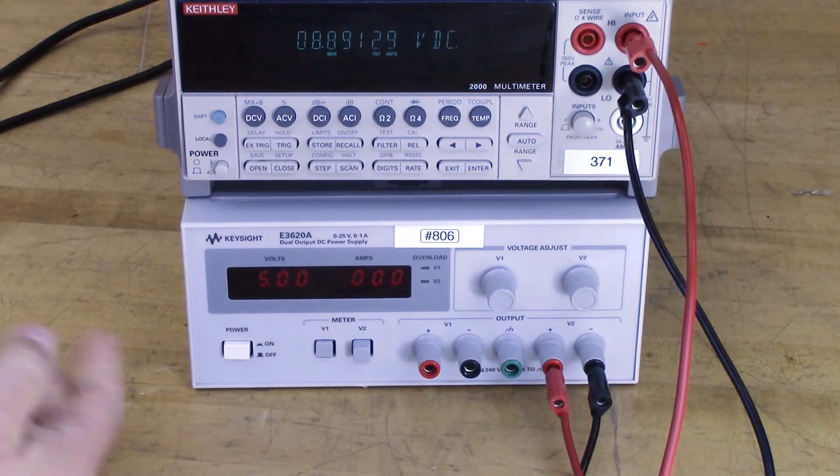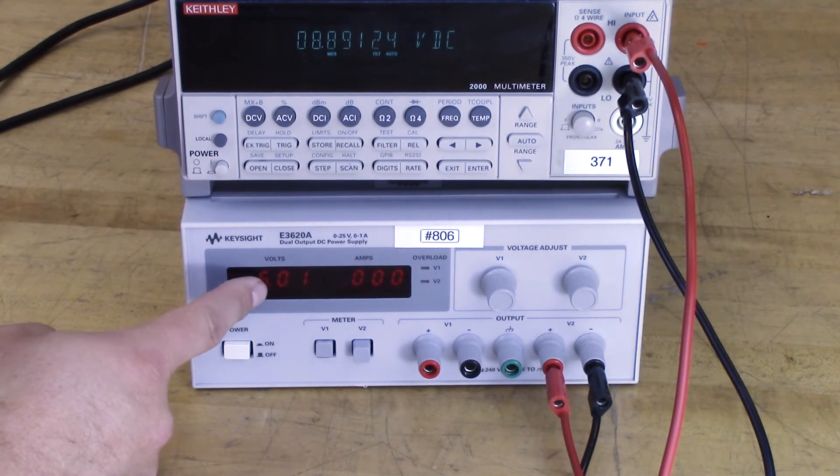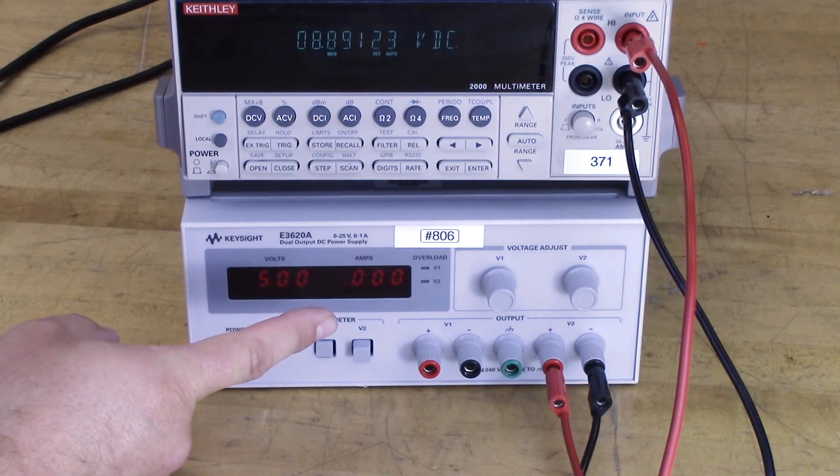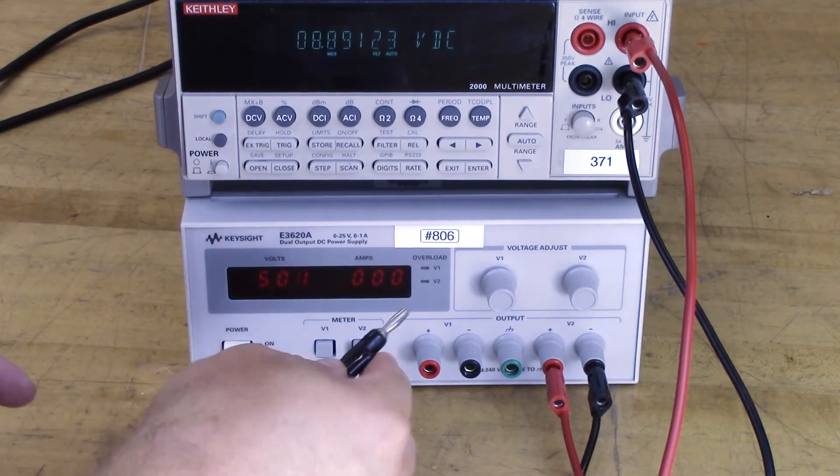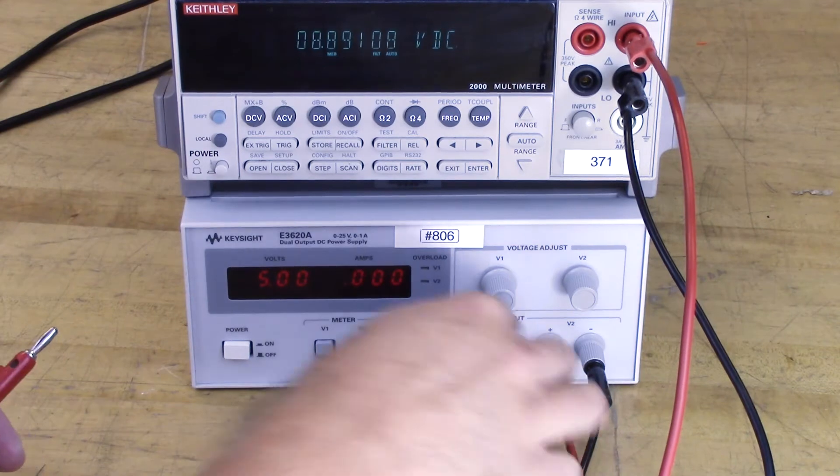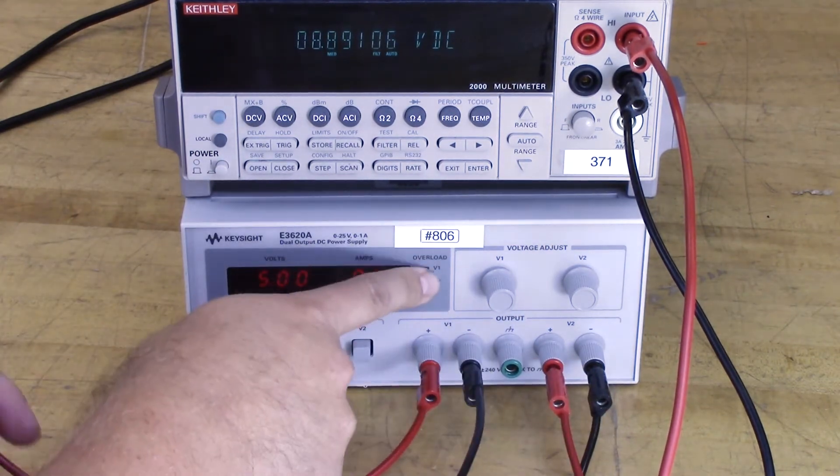So one of the things that's nice about a benchtop multimeter is that it has short circuit protection and overload protection. So this is a constant voltage power supply. It will, as best as it can, maintain this voltage and the current will vary. One of the things that's really nice about this particular power supply as well is that it has over voltage protection.